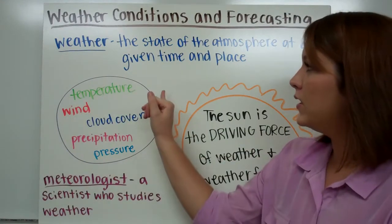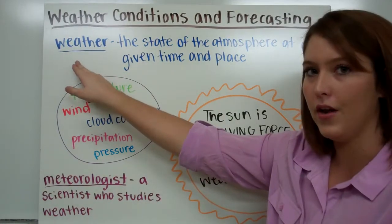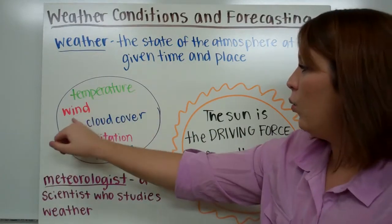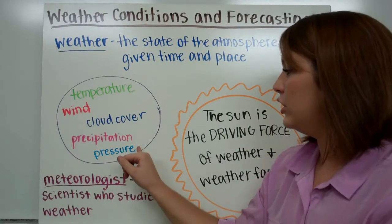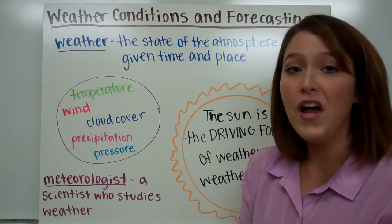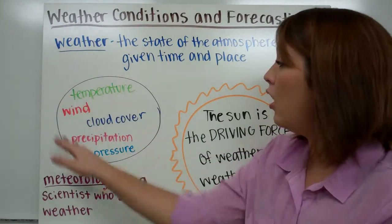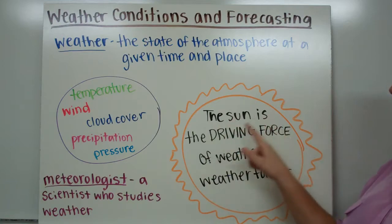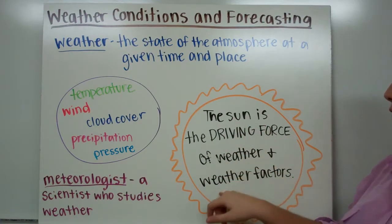There are multiple different factors that work together to produce the weather that we see on Earth. These are temperature, wind, cloud cover, precipitation, and pressure. There is one driving factor that influences all of these, and that is the sun. The sun is the driving force of weather and weather factors.